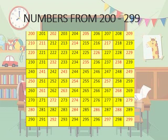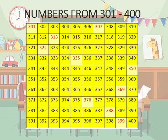After 199, the series of 200s starts and continues up to 299. In this slide, numbers from 301 to 400 are shown.